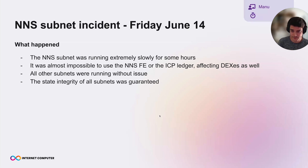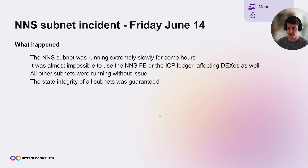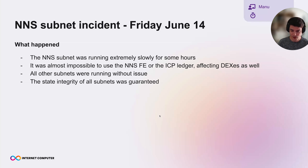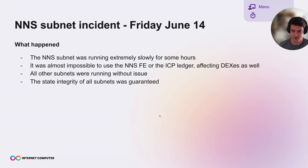This was only the NNS subnet — all other subnets were running without issue. It was more of an availability issue, so state integrity was always guaranteed, but it was running extremely slowly and very hard to interact with. I'll now give a bit more context on how things work and what enabled this problem, and the lessons we're learning.